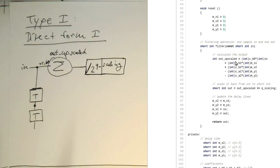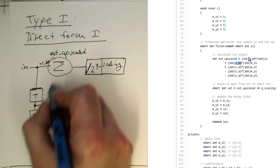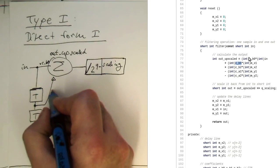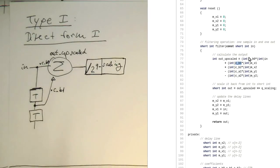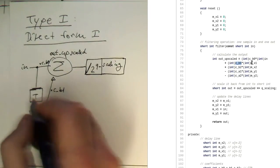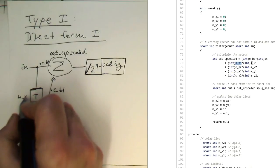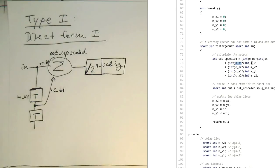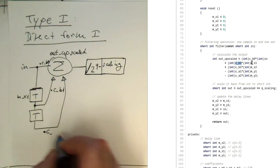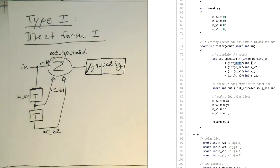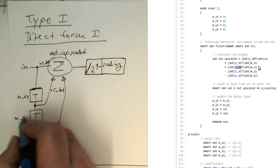And then we've got the next one, which is multiplied by C_B1. This delay line here is called M_X1, and this delay line here is called M_X2.